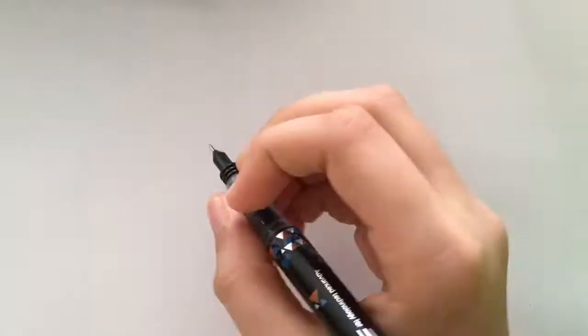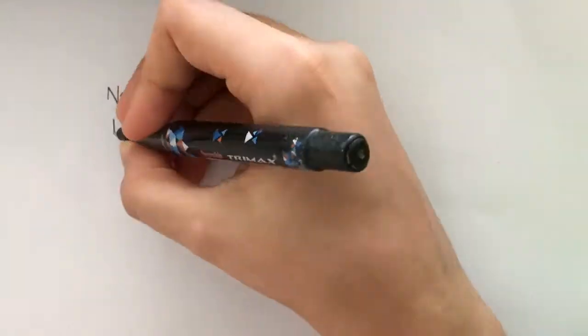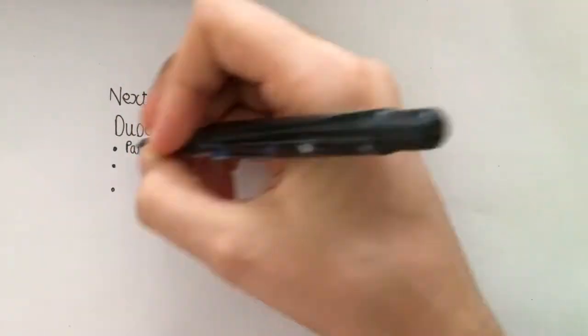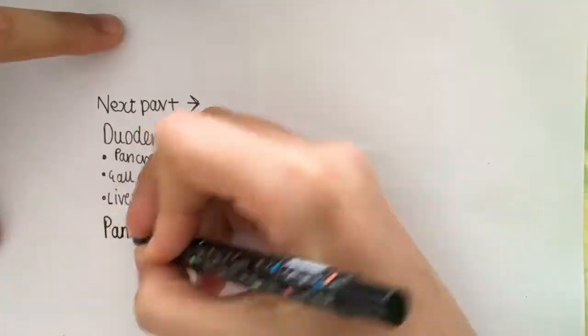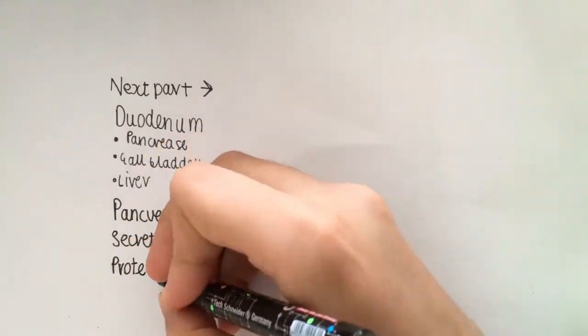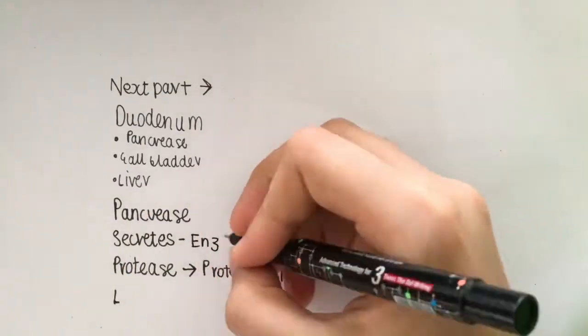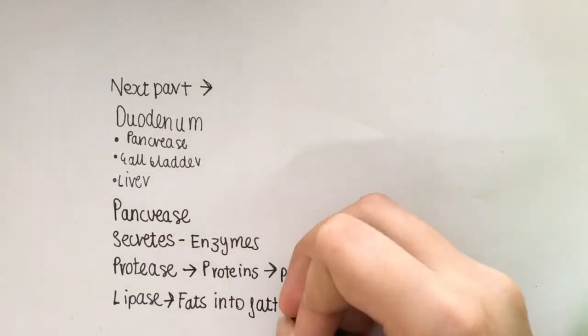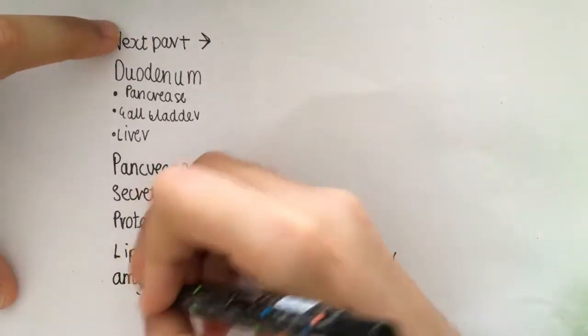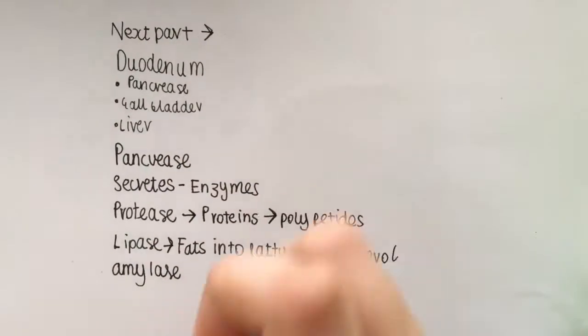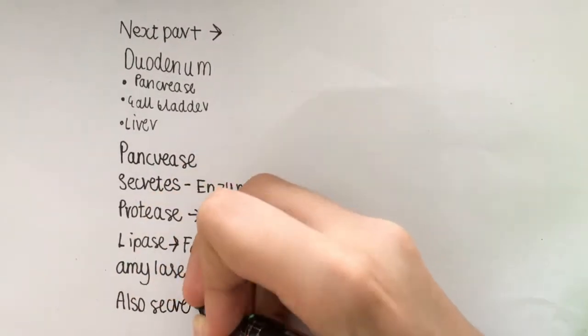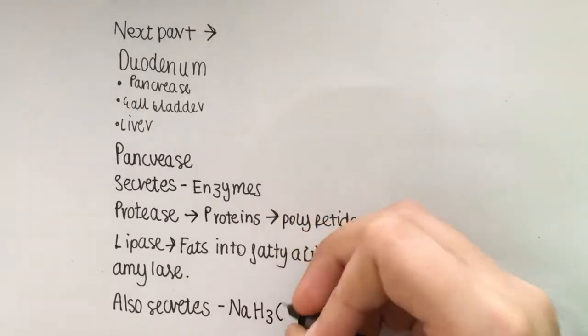Now the chyme moves down into the duodenum, which contains three organs: the pancreas, the liver, and the gallbladder. The pancreas secretes protease, lipase, and amylase, which breaks down proteins, fats, and carbohydrates respectively. It also secretes sodium hydrogen carbonate, which reduces the acidity of the chyme.